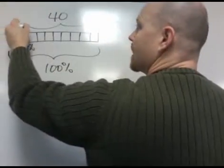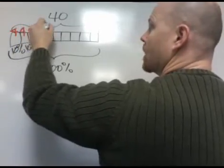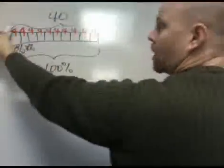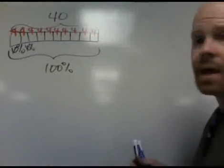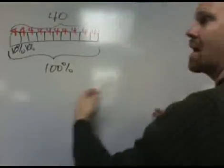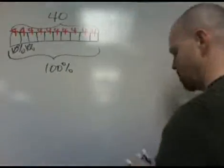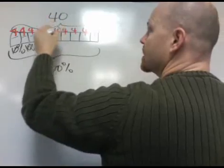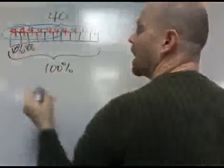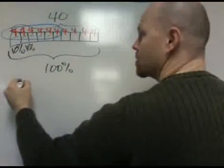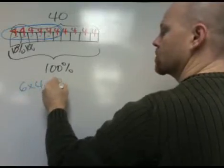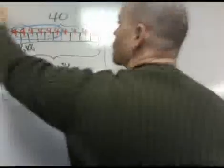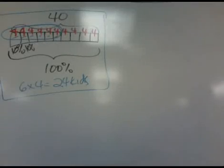Each piece represents 4 kids, so 4 kids equals 10%. Since 60% have blue backpacks, we take 6 of those pieces — 1, 2, 3, 4, 5, 6 — and those kids have blue backpacks. So 6 times 4 equals 24 kids have blue backpacks. That's one way to solve this problem.